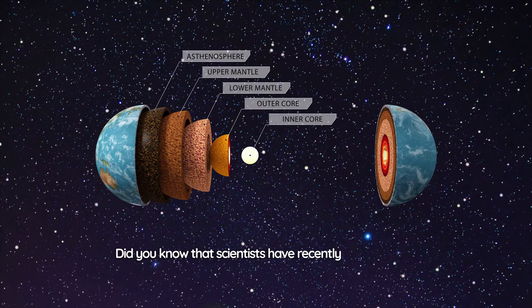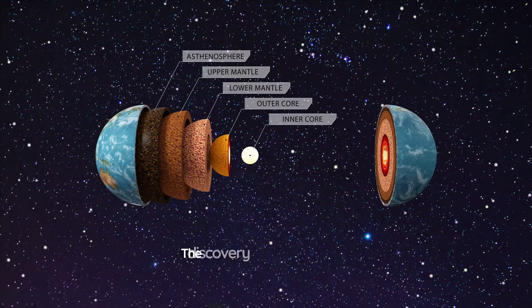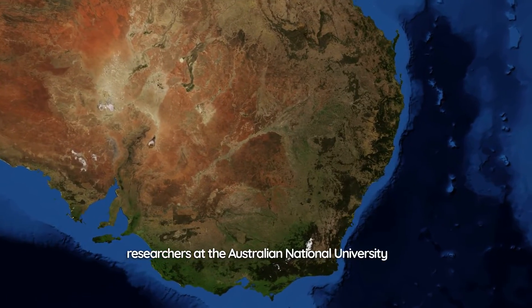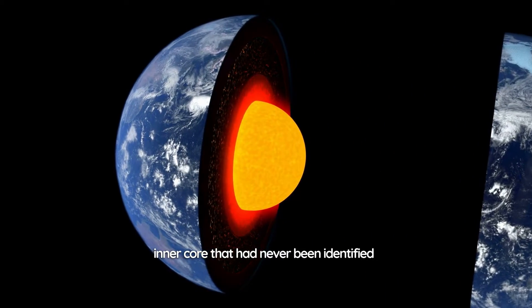Did you know that scientists have recently discovered evidence of a new layer at the Earth's inner core? The discovery was made by a team of researchers at the Australian National University, ANU, who found an iron-nickel alloy ball within the inner core that had never been identified before.